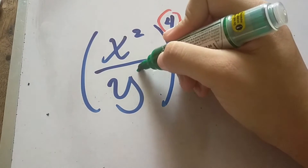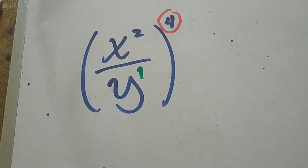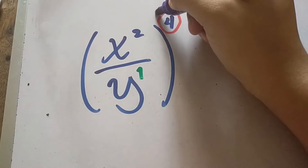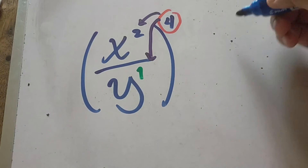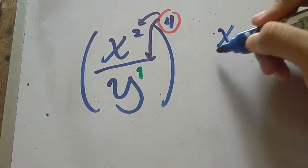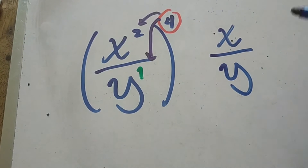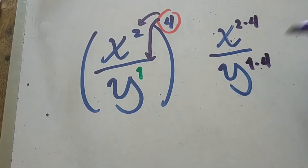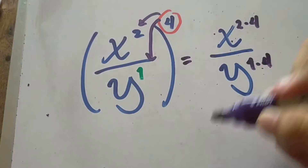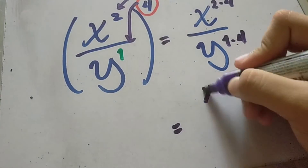Since y has no exponent, we can place 1 there. Take note: all variables and numbers have an exponent of 1. We are going to distribute 4 to each variable in both the numerator and denominator. We copy all the bases present in the numerator and denominator, then multiply the exponents — so we have 2 times 4, and 1 times 4.